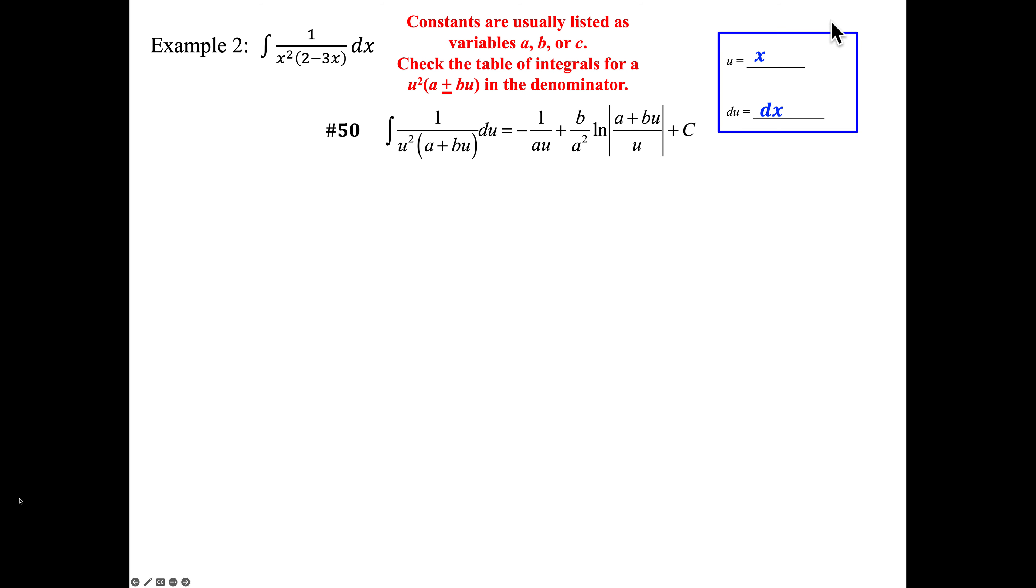U is X, DU will be DX, just a straight substitution. A is 2, B is negative 3 because we want this to be a plus. We can substitute it in: negative 1 over 2, or A which is 2, U which is X, plus B which is negative 3, over 2 squared 4 times LN of 2 minus 3X over X plus C.